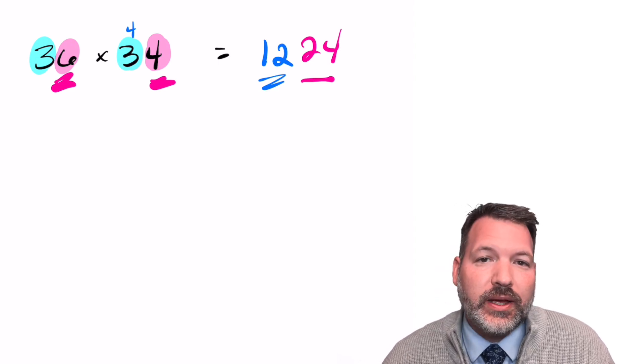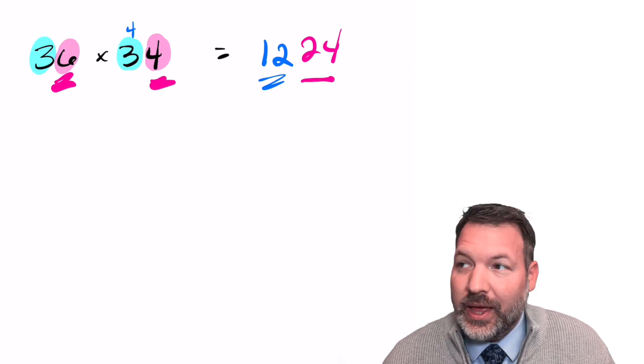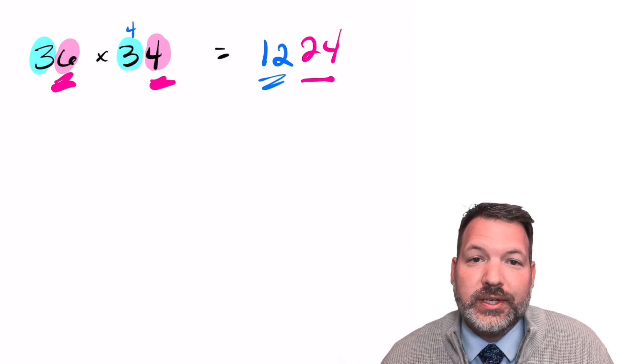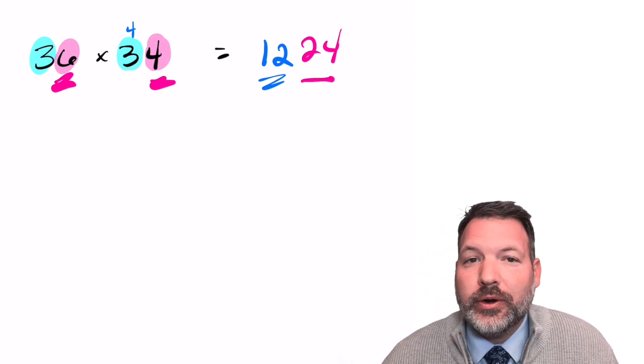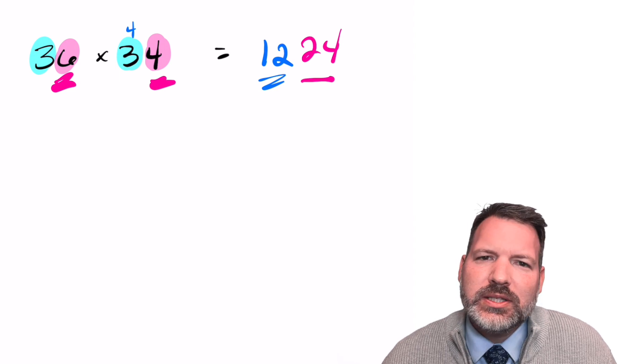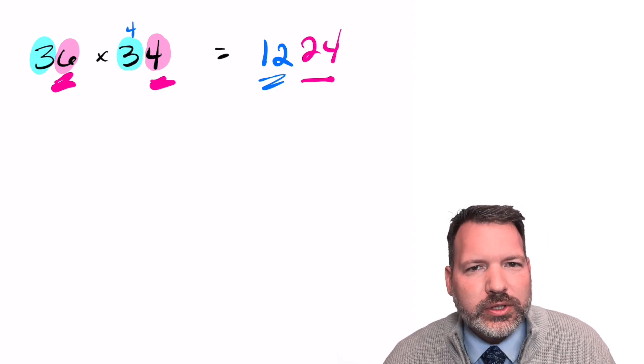This won't work on something like 36 times 37. For that, you would either use a different math trick, or you would just use the standard algorithm. Or, let's be honest, you would just use a calculator. Now, what I would encourage my students to consider next is, why does this trick work under this particular circumstance?